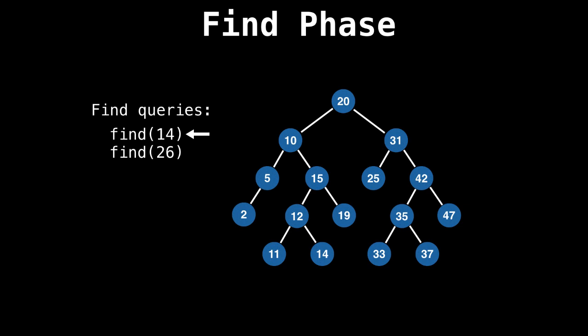Let's do an example of finding nodes in a binary search tree. Suppose we're looking for 14. We should have a reference to the root node, so this is where we start. We compare 20 and 14. 14 is less than 20, so we go to the left subtree. 14 is greater than 10, so we go to the right subtree. 14 is less than 15, so we go to the left subtree. 14 is greater than 12, so the right subtree.